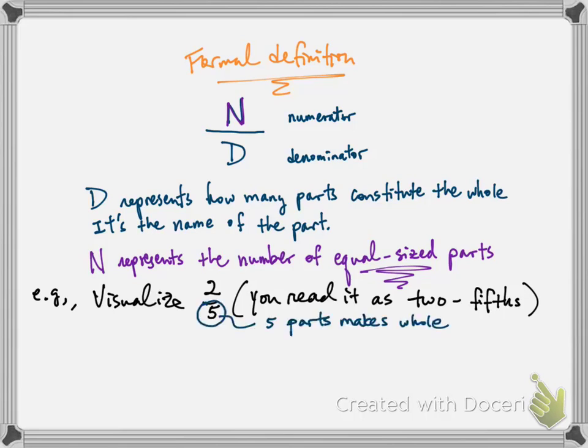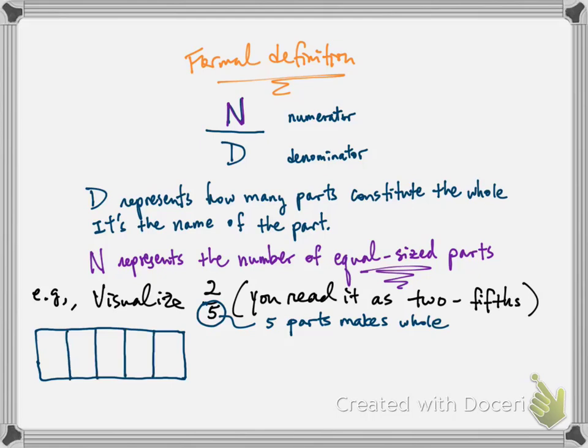So if we use a rectangular representation to represent the whole, then I would divide this rectangle into five equal-sized pieces, where each piece is a fifth. Then the numerator of being two tells me that I need to take two of those equal-sized parts. The result of taking two pieces of equal-sized parts, where each part is one-fifth, is exactly what two-fifths is.